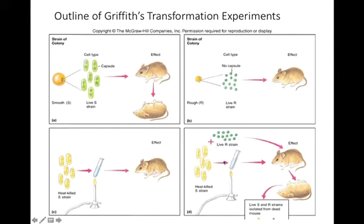But in individual form, R-strain was also avirulent and heat-killed S-strain was also avirulent. Then what was the reason behind that?